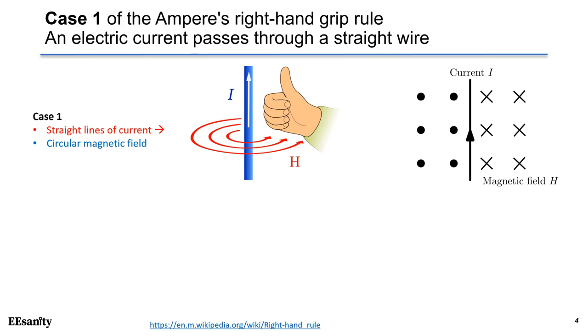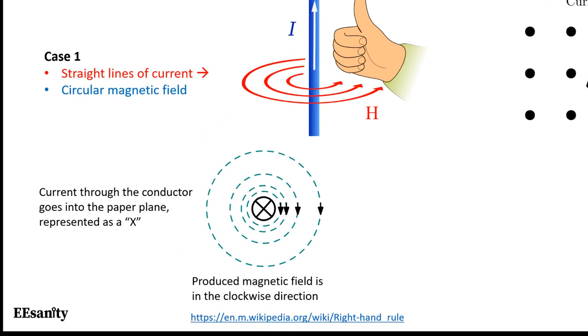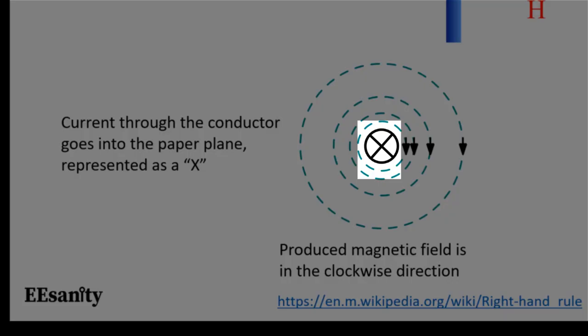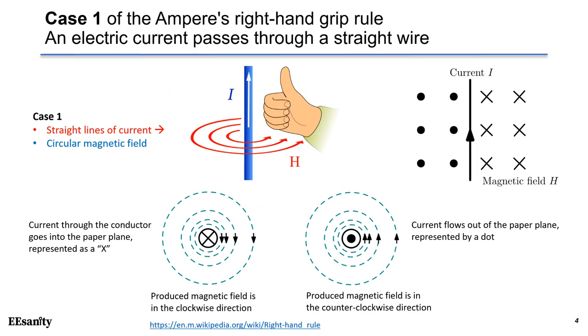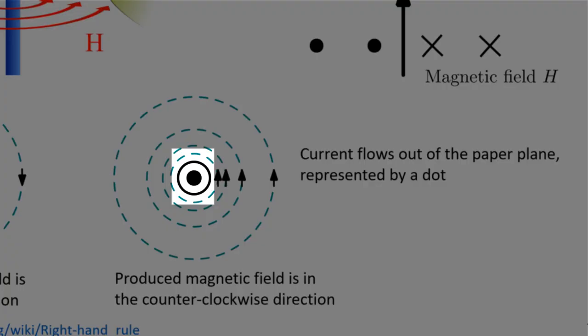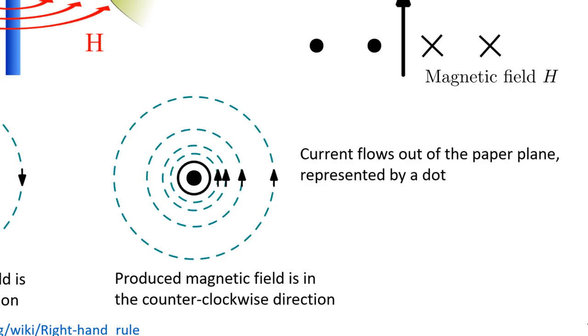Next, we will study the current in two directions. If we look at the conductor from the top view, the circle represents the conductor cross-section, and the cross in the circle represents that the conductor has a current flowing into the paper plane. Using the right-hand grip rule, we can find that the magnetic field is in the clockwise direction. Please pause the video and try the right-hand rule by yourself — in this case, the fingers should curl in the clockwise direction. Now, with current in the opposite direction flowing out of the paper plane, represented by a dot in the circle, the produced magnetic field is in the counter-clockwise direction.